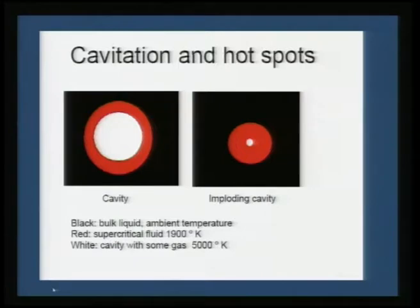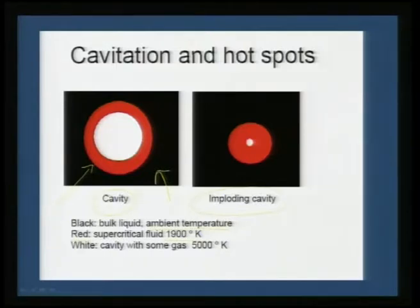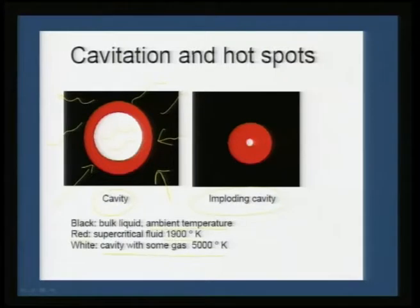Cavitation and hot spots bring about meaningful data. You see the cavity here and an imploding cavity, with the black region being your bulk liquid at ambient temperature. Moving toward the bubble, the red zone is a supercritical fluid which can achieve temperatures up to 1900 K, compared to local areas that are nearly at room temperature. Closer to the cavity, you achieve around 1900 K, and the white space — the cavity trapped with some gas — reaches temperatures on the order of 3000 to 5000 K, depending on the nature of the gas trapped.